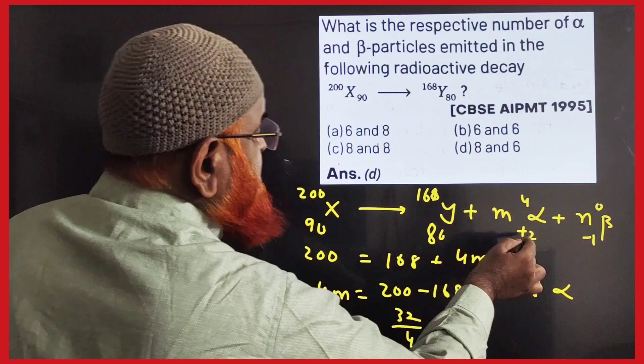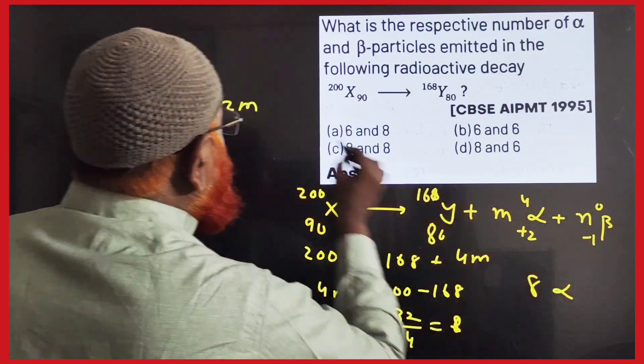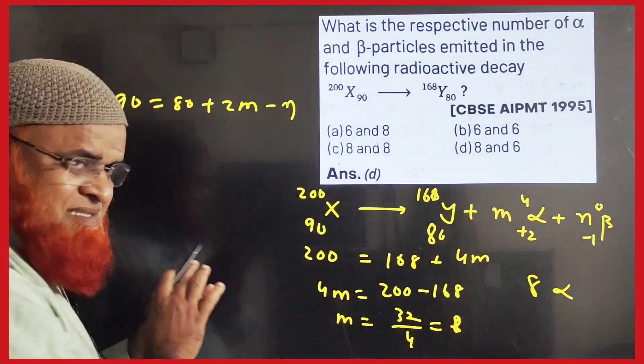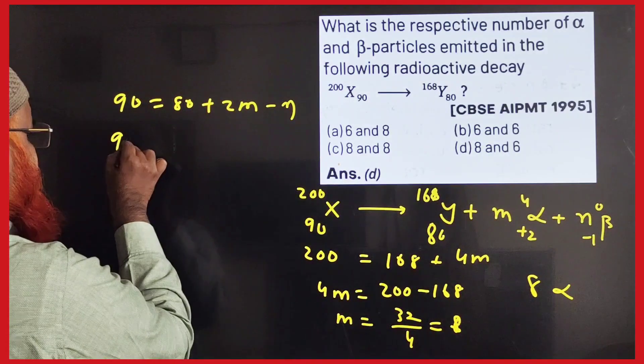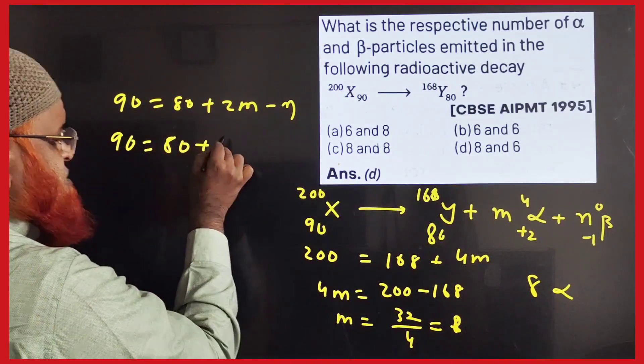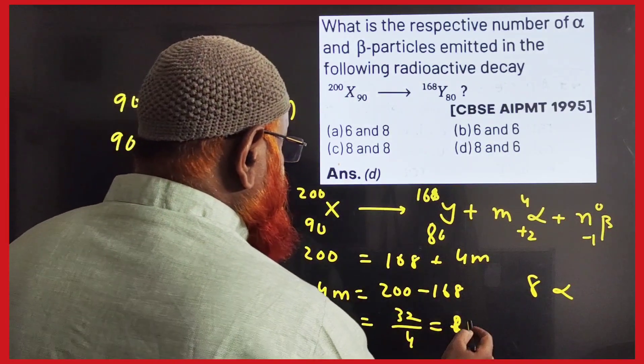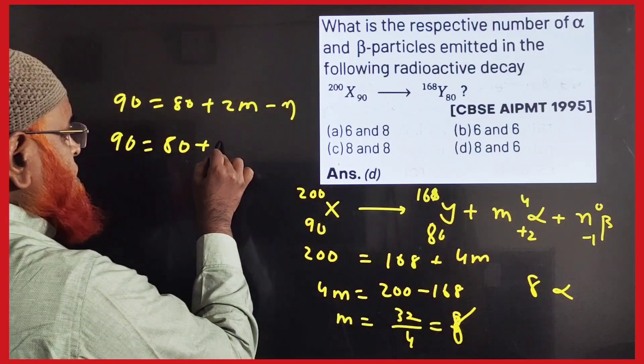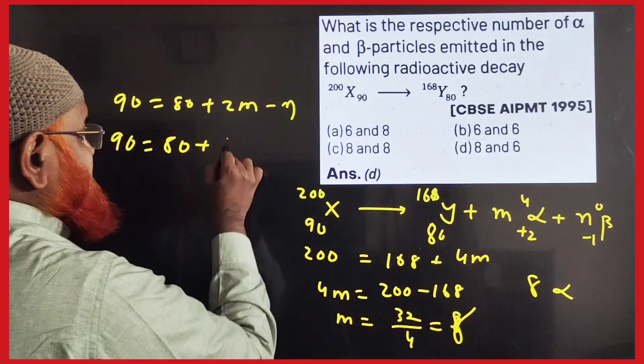plus M into 2, that's 2M, and N into minus 1, that's minus N. So what I am going to do: 90 equals 80 plus 2 into M. M is how much? M is 8. So therefore 2 into 8 is going to be 16